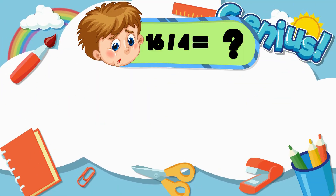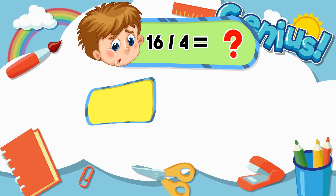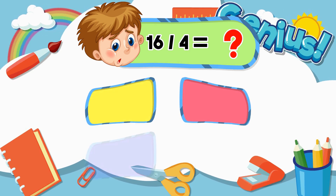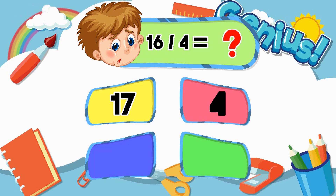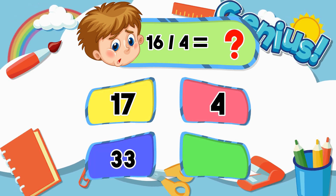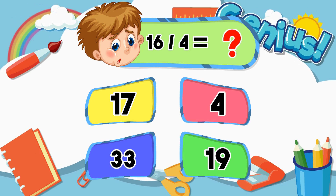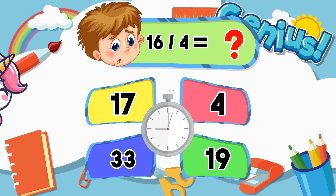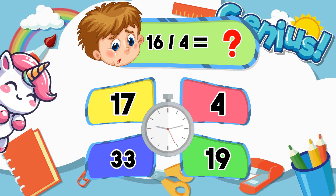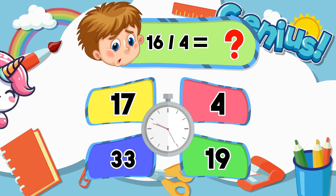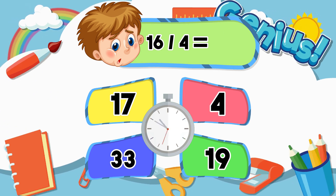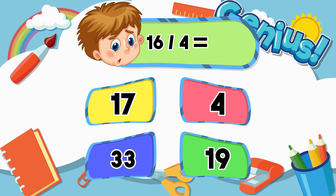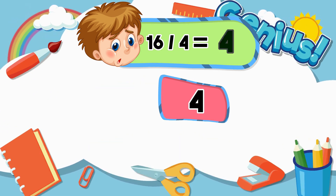What is 16 divided by 4? Options: 17, 4, 33, 19. Answer: 4.